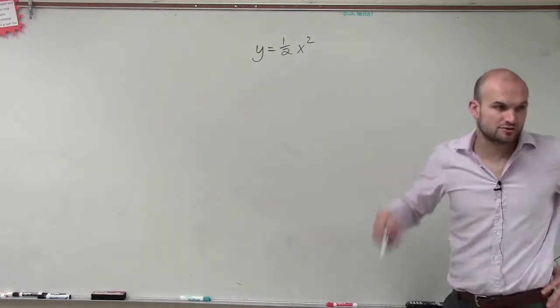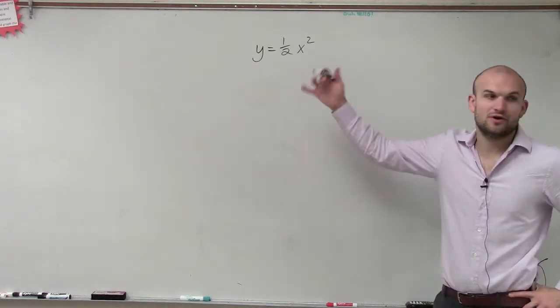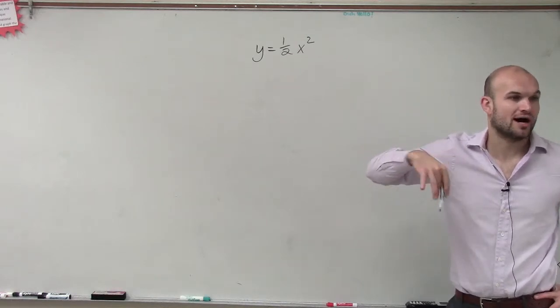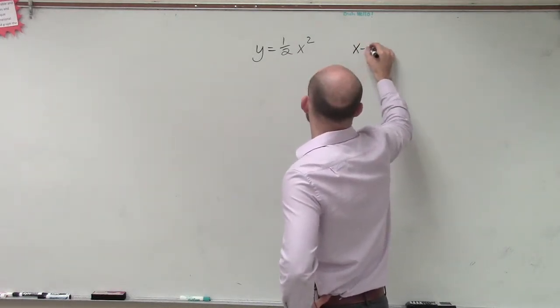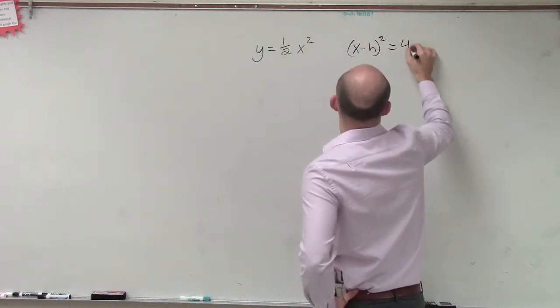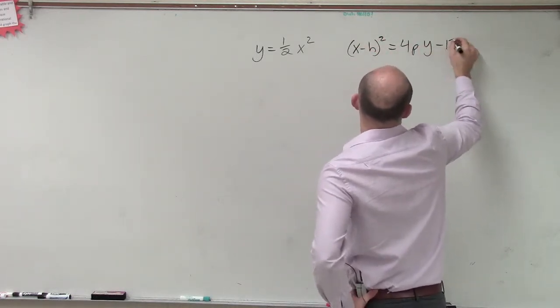So here, do I have x squared or y squared? I have x squared, all right? So therefore, I know this graph is going to open up or down. So therefore, I'm going to want to rewrite it in our general form, which is (x minus h) squared equals 4p(y minus k).